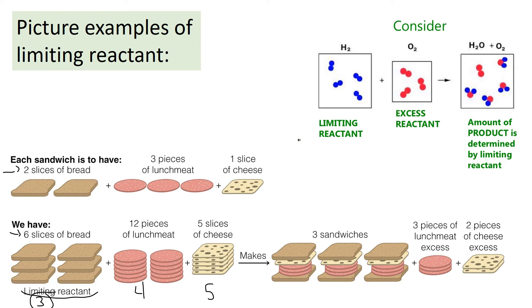We can make three sandwiches. Once the bread is gone, we still have three pieces of lunch meat and two slices of cheese left over — leftovers of the other ingredients. The limiting reactant is the one that made the least product, and how many sandwiches it made is our theoretical yield.